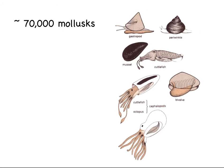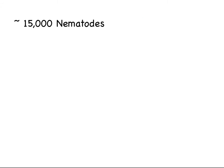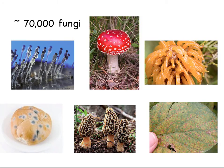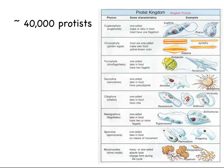70,000 mollusks have been identified — mollusks include bivalves like clams, cephalopods like squid, cuttlefish, and octopus. There are about 15,000 named species of nematodes or roundworms — who would have thought 15,000 different species? Or 70,000 different species of fungi thus far named? Or 40,000 protists thus far named?